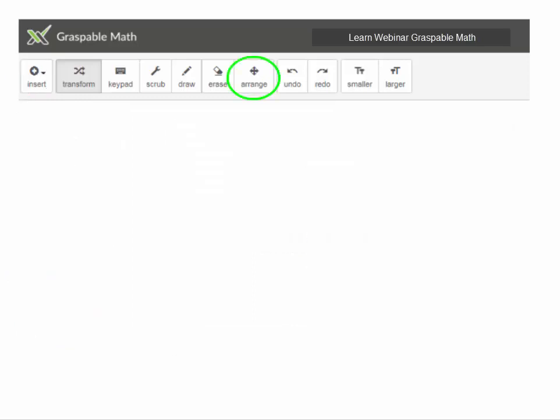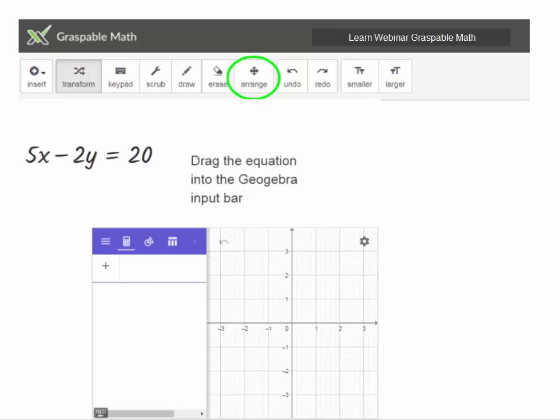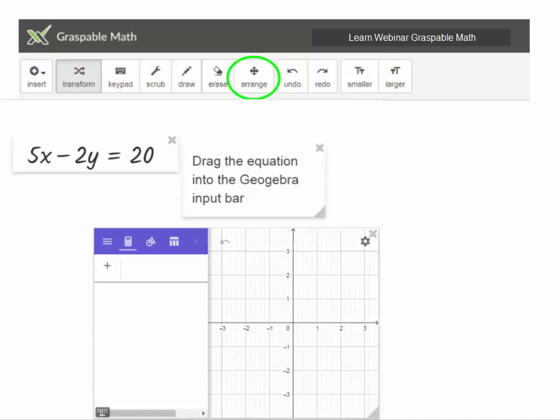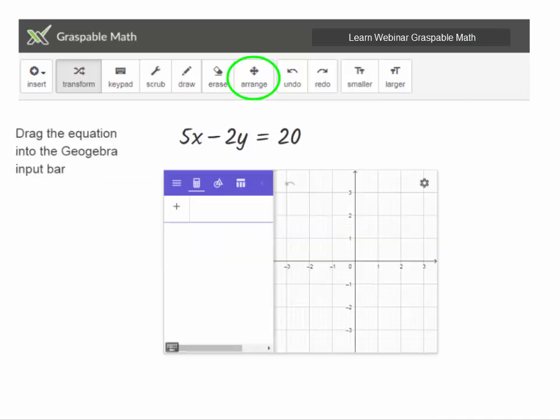After you've started putting a bunch of things on the canvas, it's going to get crowded. Graspable Math doesn't rearrange things for you. So that's what the Arrange button is for. Supposing I've inserted an equation, a text, and a GeoGebra graph, and I don't like the way they're arranged, I click on the Arrange button, and I can now move things. I can resize them by dragging the corner. I can even delete them so I can get them to look the way I want.